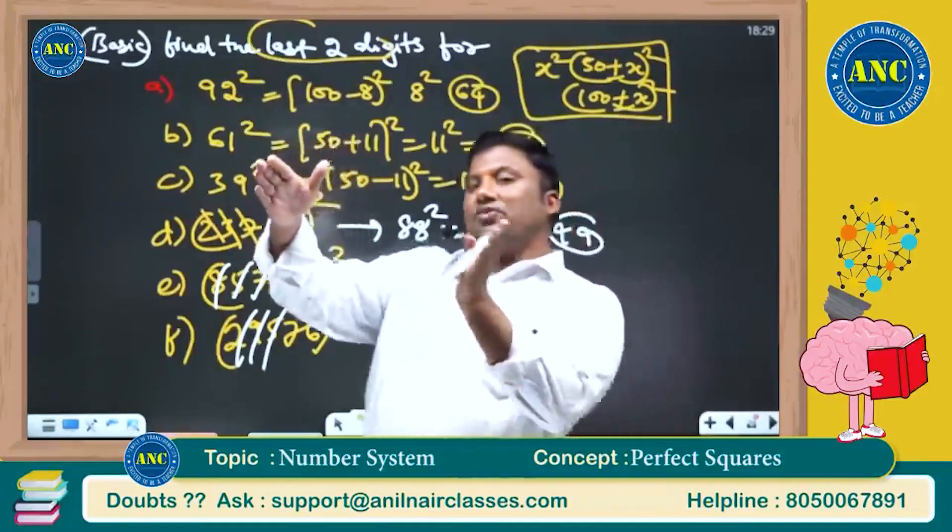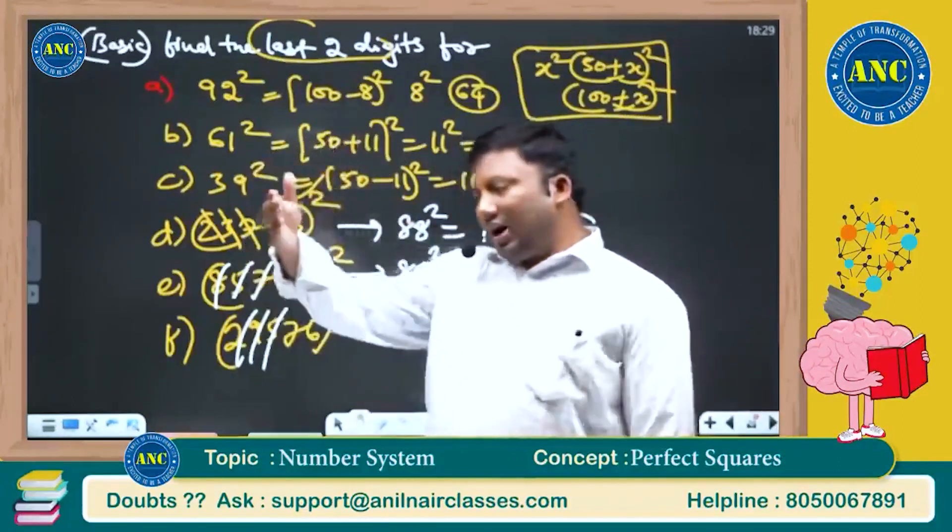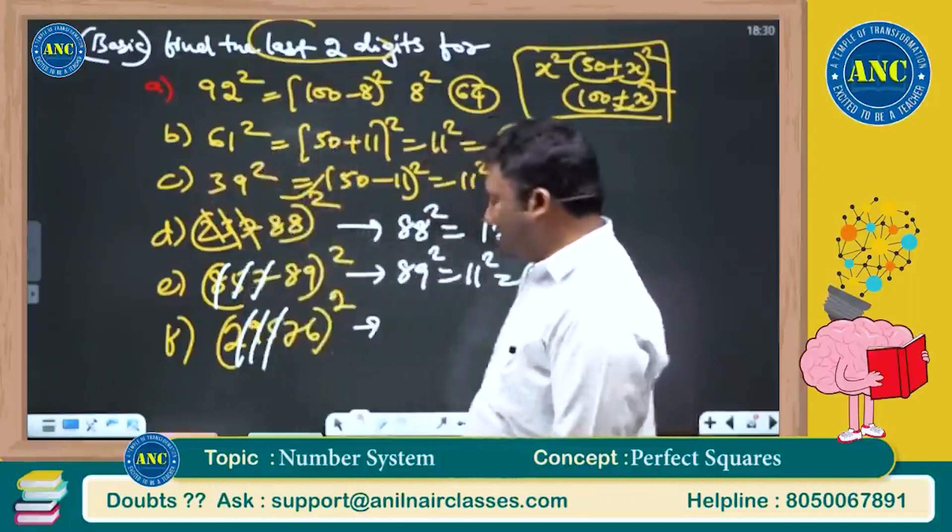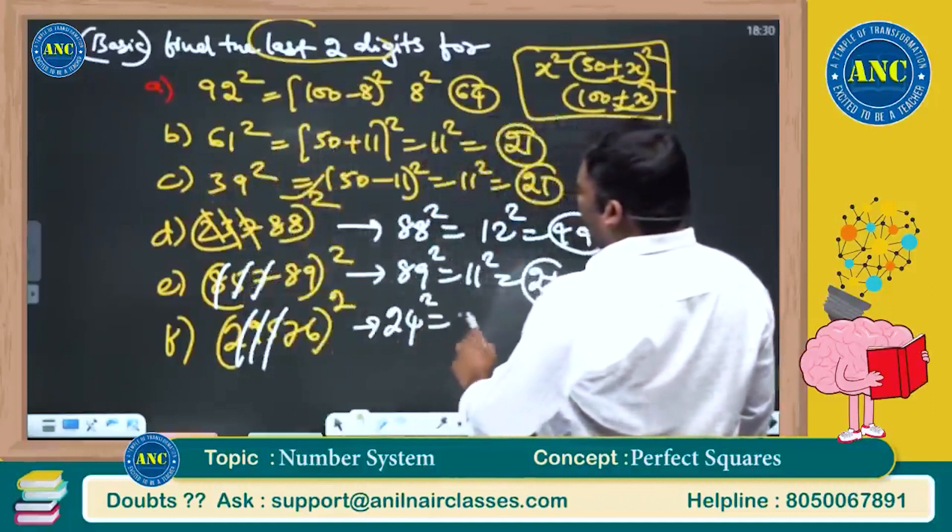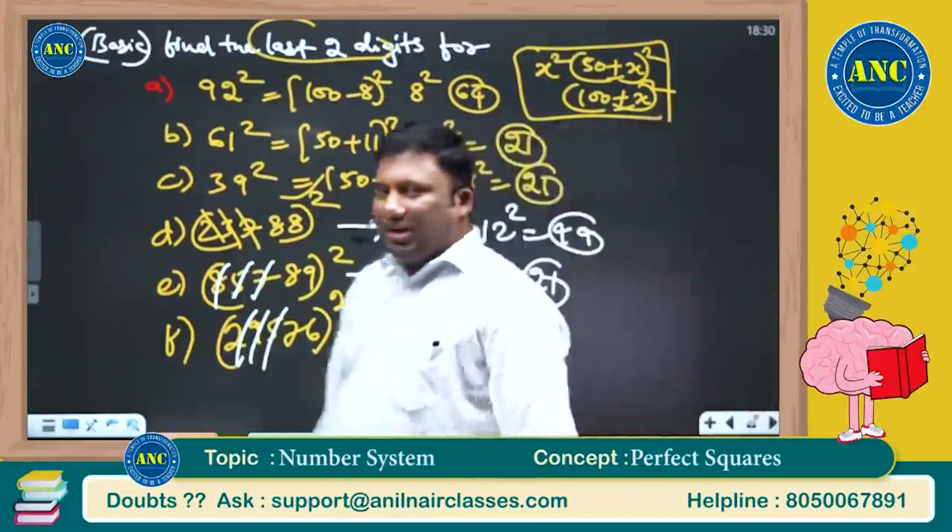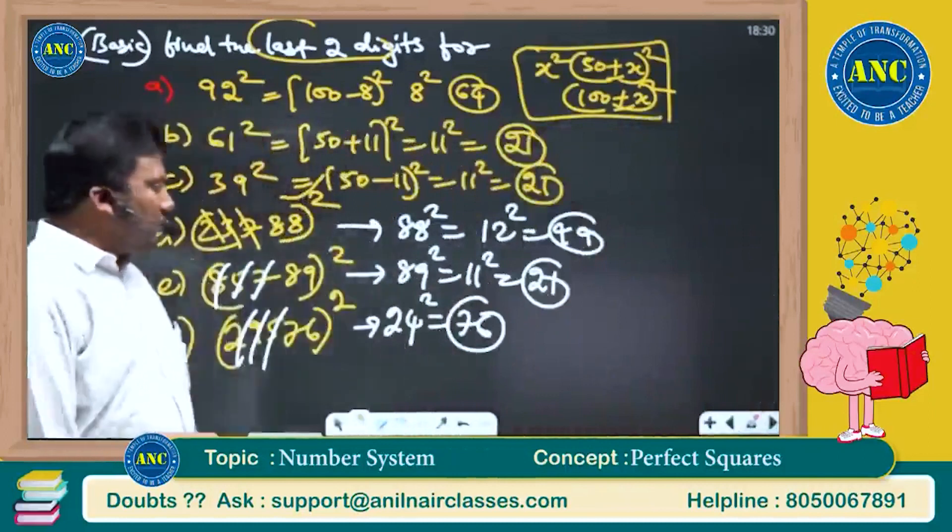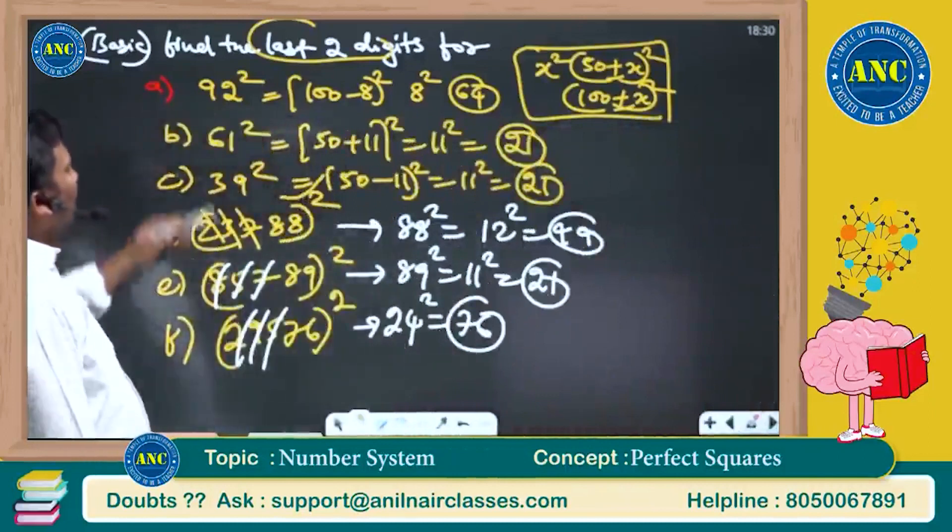76 square. 76 is the exact midpoint. From 50 it is 26 more, or from 100 it is 24 less. So 24 square or 26 square. It is 76. 576.